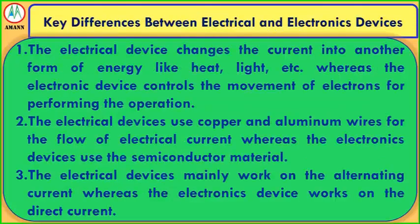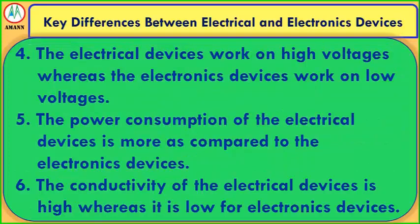Key differences between electrical and electronic devices: The electrical device changes current into another form of energy like heat, light, etc., whereas the electronic device controls the movement of electrons for performing an operation. Electrical devices use copper and aluminum wires for current flow, whereas electronic devices use semiconductor material. Electrical devices mainly work on alternating current, whereas electronic devices work on direct current. Electrical devices work on high voltages, whereas electronic devices work on low voltages.